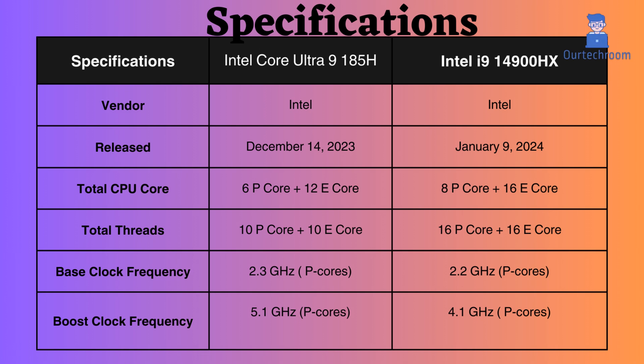The base and boost frequencies of the Intel Core Ultra 9 are higher than those of the Intel i9-14900HX, which could benefit single-core performance tasks as well as multi-core performance. However, due to the higher number of performance cores and threads, the overall raw performance of the Intel i9-14900HX is better than that of the Intel Core Ultra 9 185H.